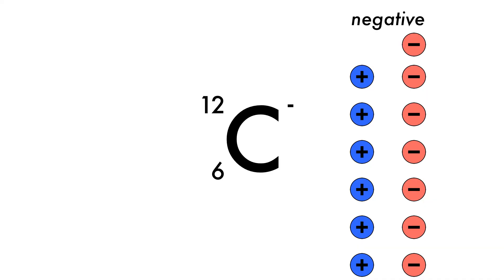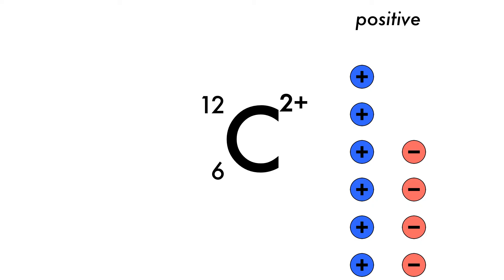If we want to display an ion, we add the charge in the top right. A negative sign means we have excess electrons. A plus sign means a positive ion, and it is called a cation, as we have more protons than electrons. We can have charges higher than one, in which case we add a number before the sign. In this case, we have a plus-two charge, as there are two more protons than electrons.